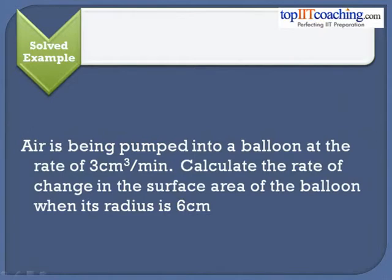Let's solve one more problem. Air is being pumped into a balloon at the rate of 3 centimeter cubes per minute. Calculate the rate of change in the surface area of the balloon when its radius is 6 centimeters. In this problem we are filling air into a balloon at the rate of 3 centimeter cubes per minute, so its volume is increasing. We have to calculate the rate of change in the surface area of the balloon.